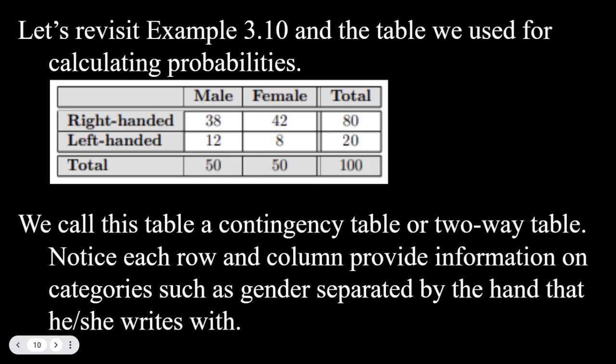And you can also view it the other way. The row gives us what hand they write with, and then that is separated into their gender. So that's a two-way table or a contingency table.